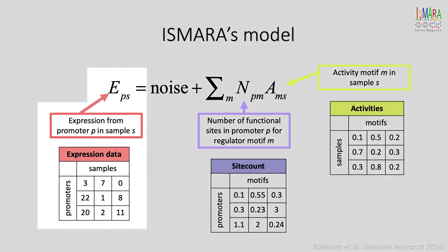First, ISMARA processes the raw sequencing data and calculates the expression matrix E that gives expression of each promoter P in each sample S. Second, ISMARA has computationally predicted transcription factor binding sites for a large collection of transcription factors across all promoters genome-wide. These binding site predictions are summarized into a site count matrix N that gives the number of binding sites for each motif M in each promoter P.